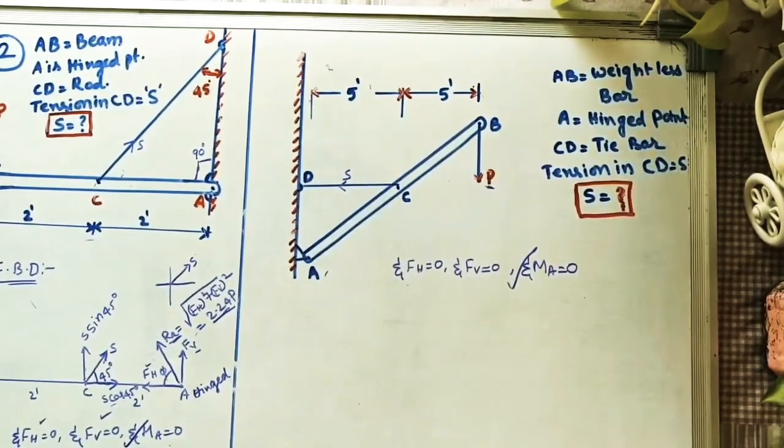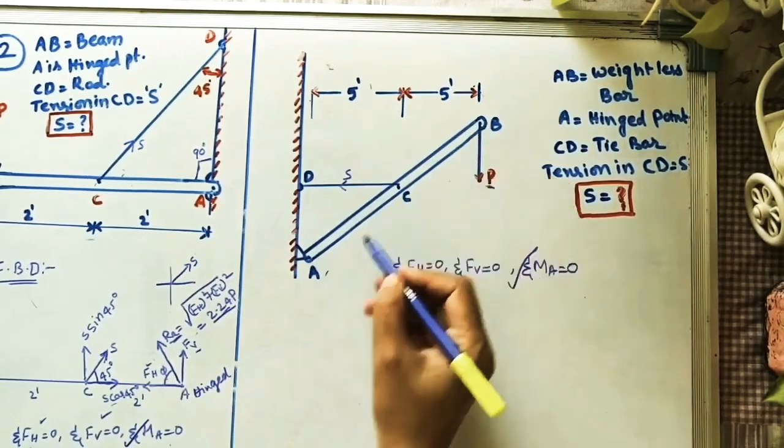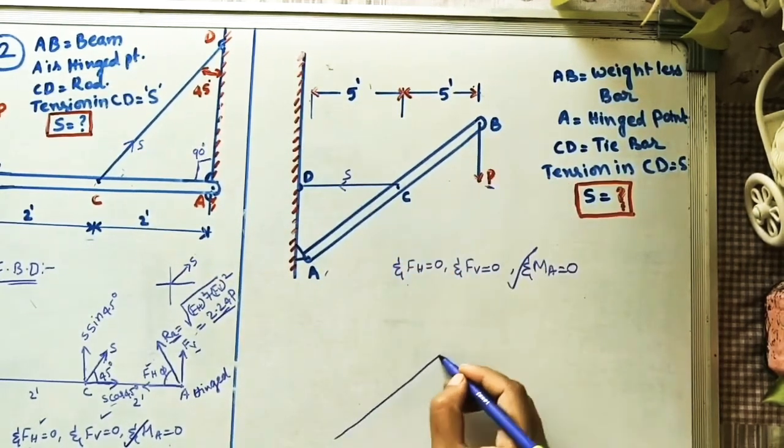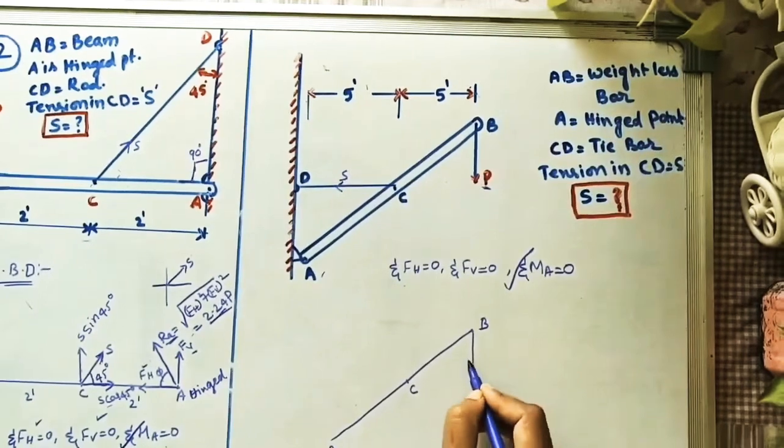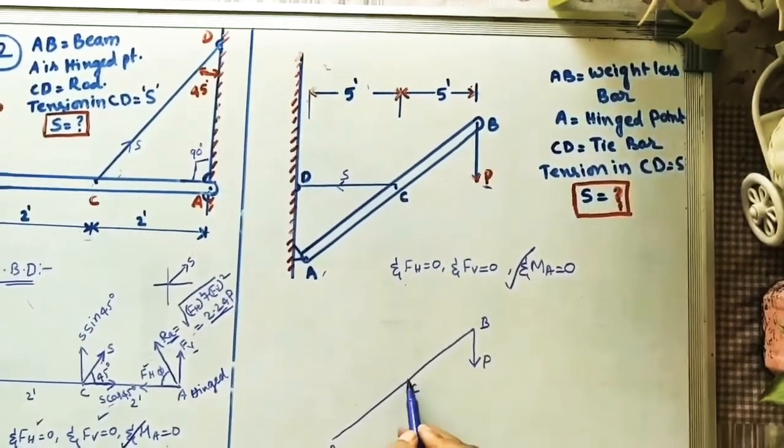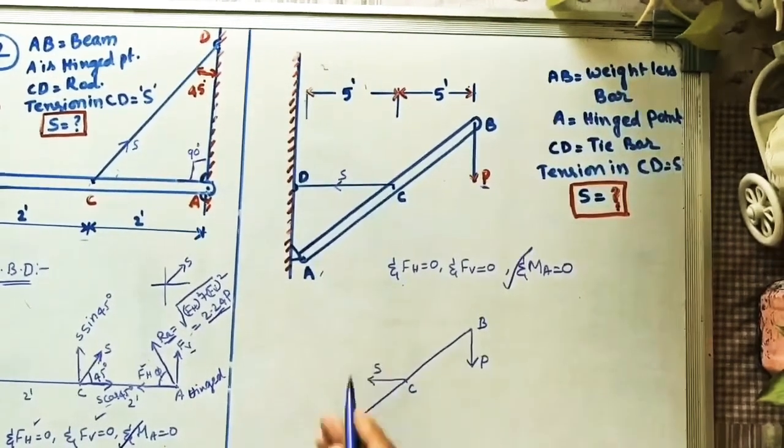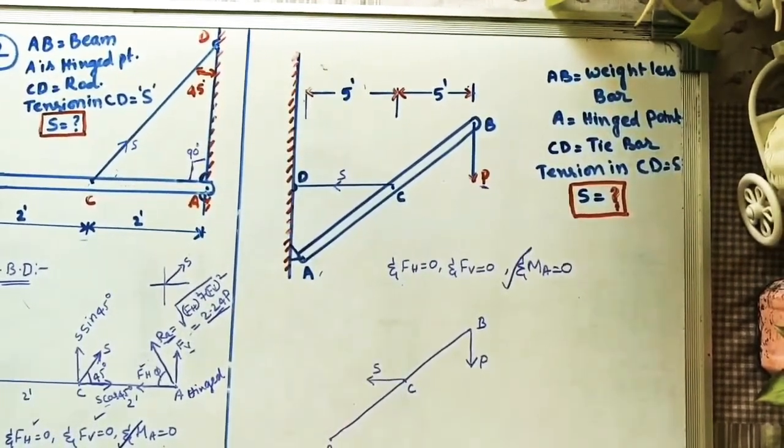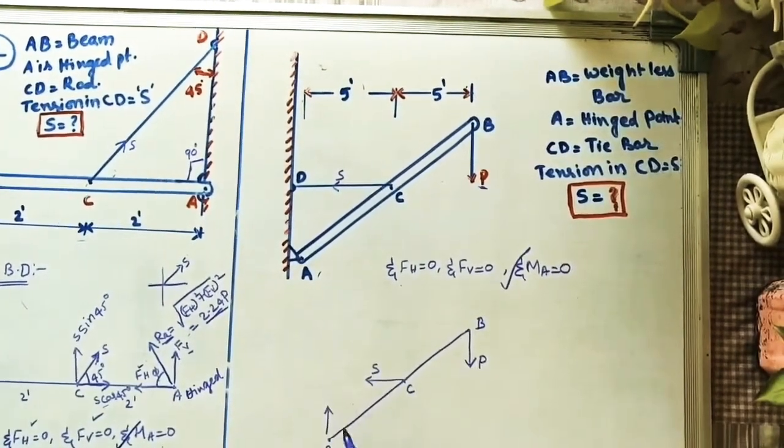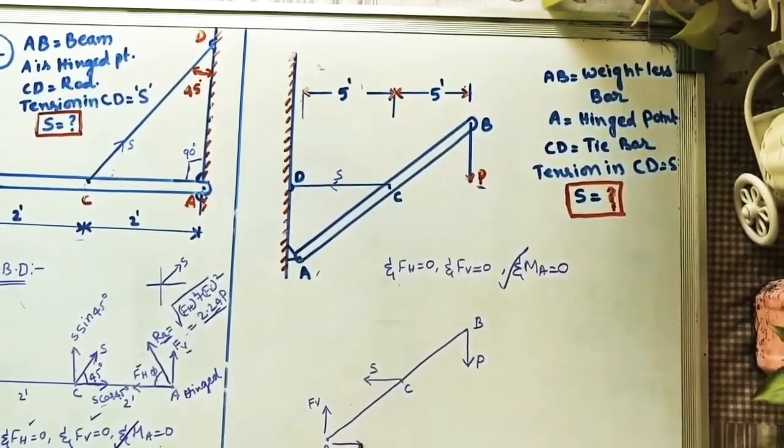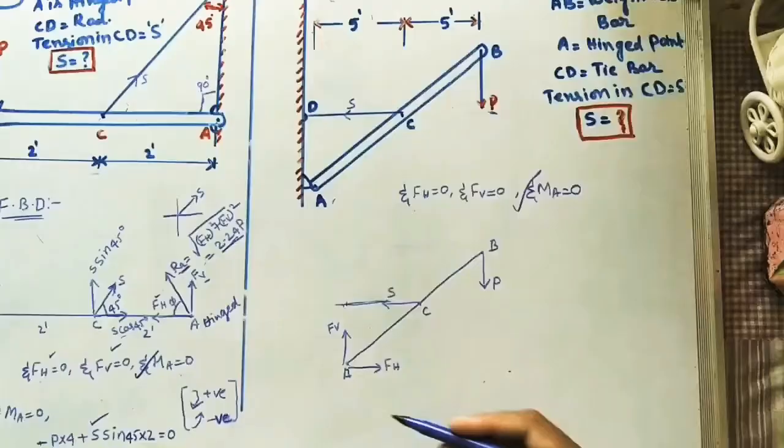Let's do the FBD diagram. FBD means free body diagram: A, C, and B. At B point, P force is acting. At C point, the force is horizontal, so I'm taking the direction this way. Point A is hinged, so there are two components: one vertical component Fv and one horizontal component Fh.